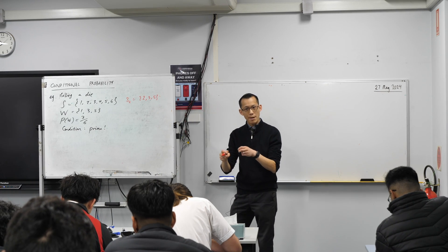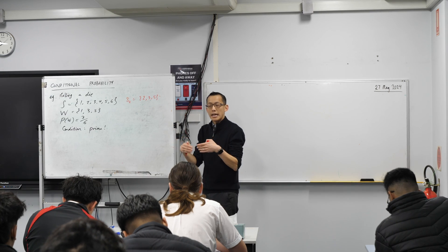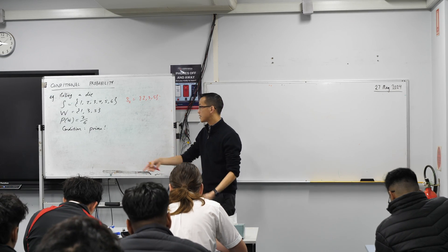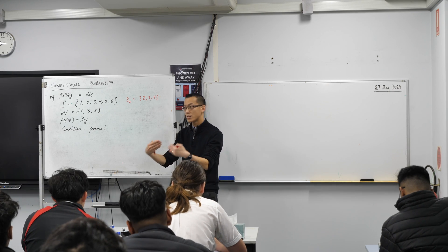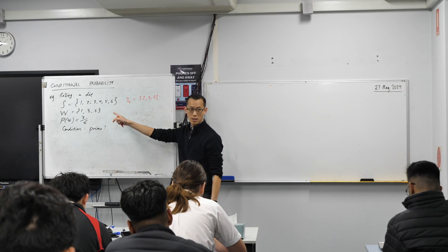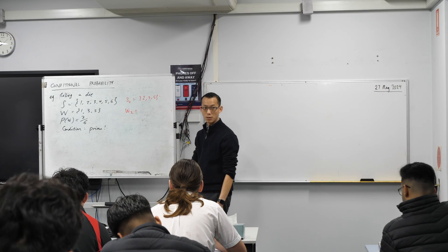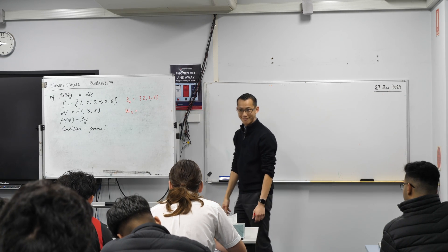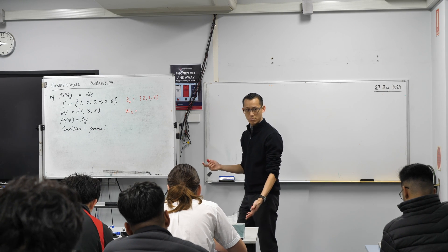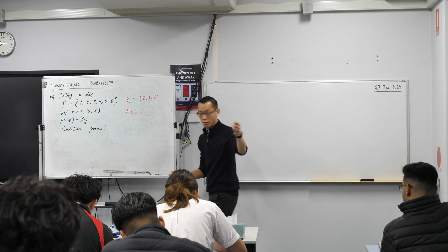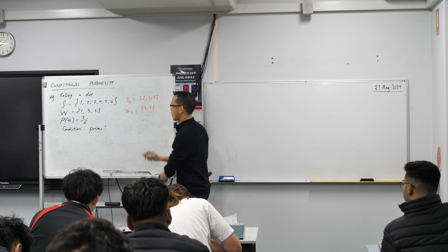In the same way, just like your sample space reduces, it's often the case that your event space also reduces. The number of ways to win is not as many as it was before. So let's call this W2. How many ways can I win now? Just two of them — three and five. So W2 = {3, 5}.